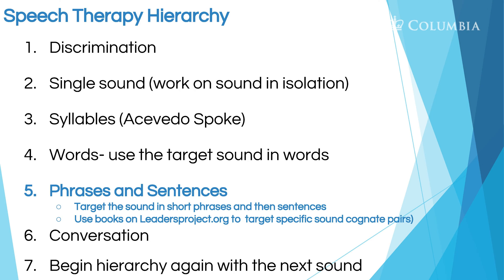Once a child has mastered the sounds at the word level, move on to phrases and sentences. Start with short phrases and then move on to full sentences. You can use books from leadersproject.org that focus on different cognate pairs. These books are unique because they target specific cognate pairs combined with low pressure sounds, nasal sounds, and vowels that are easy for children with cleft palate to produce.